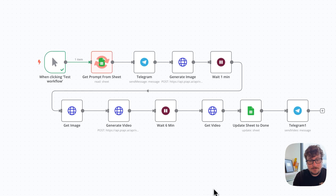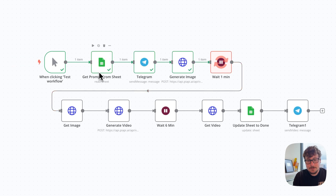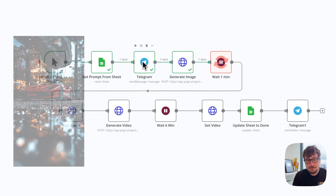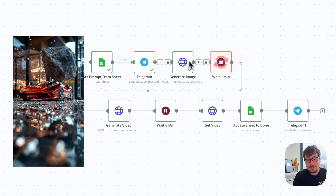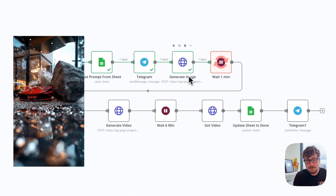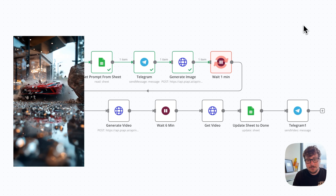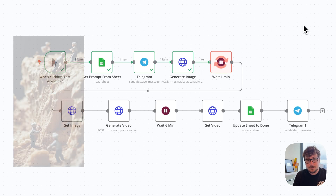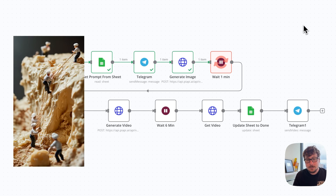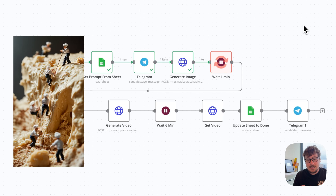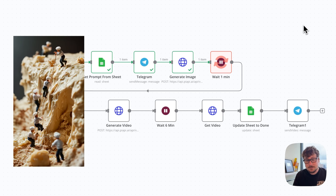So let me click this to show you how it goes. Essentially what it's going to do is get a prompt, communicate with my Telegram, generate an image, wait for that image to be generated, turn that into a video, and then send it to me and my Google Sheets.